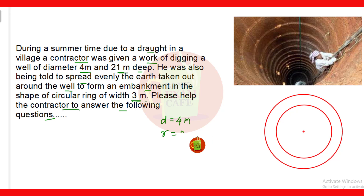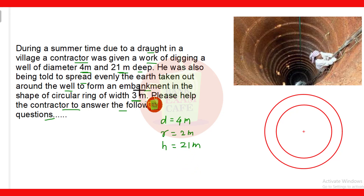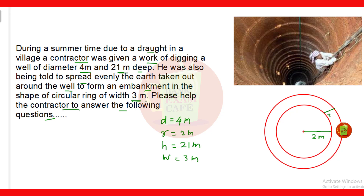The radius is 2 meter and the depth of the well is 21 meter — that is, the height is 21 meter. The same earth taken out of the well should be spread around the well in a circular ring of width 3 meter. So the inner radius is 2 meter, the width is 3 meter, and you have to answer the questions.